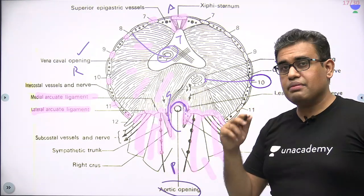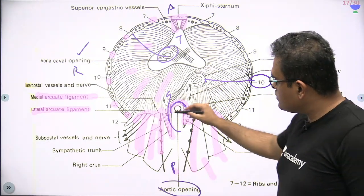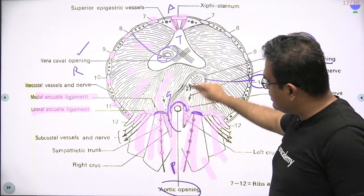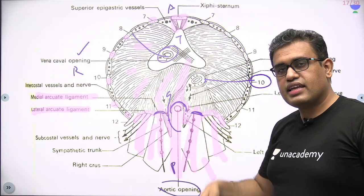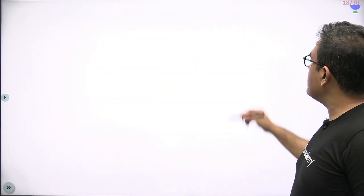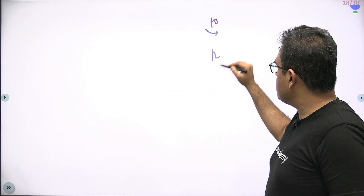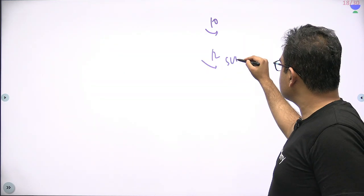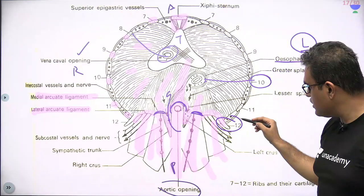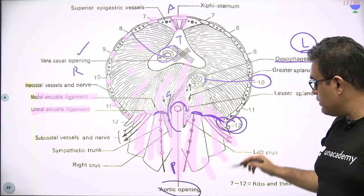Now the minor openings. The sympathetic chain of ganglia passes through the medial arcuate ligament — remember the paravertebral chain of ganglia is sympathetic, running alongside the vertebral column. Then there is the 12th rib — below the 12th rib passes the 12th intercostal nerve and vessels, also known as the subcostal nerve and vessels. These pass beneath the lateral arcuate ligament.